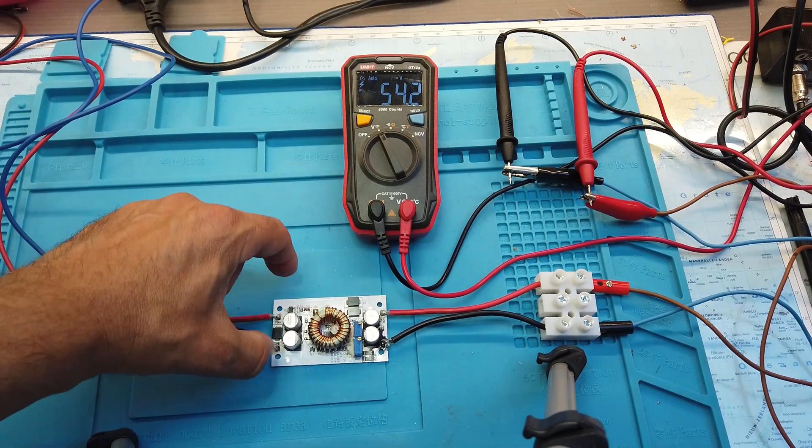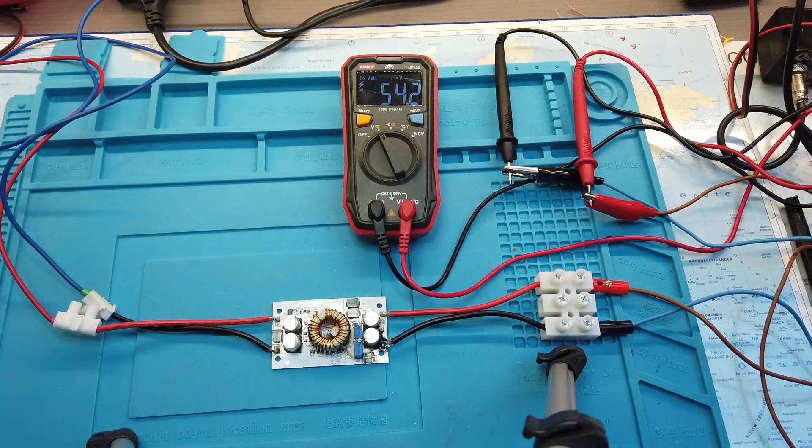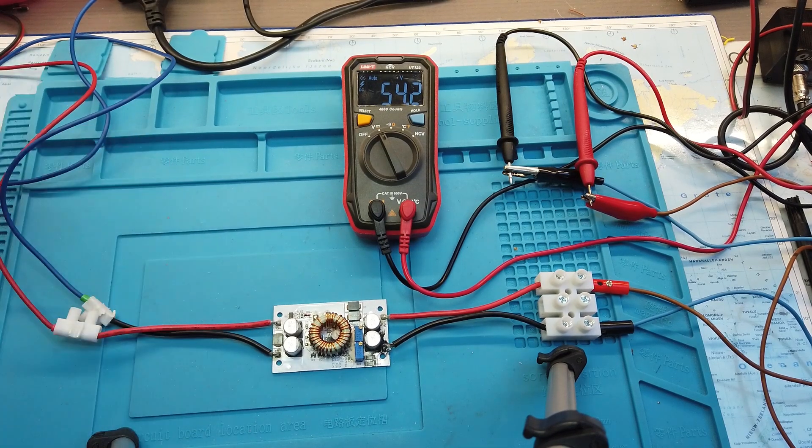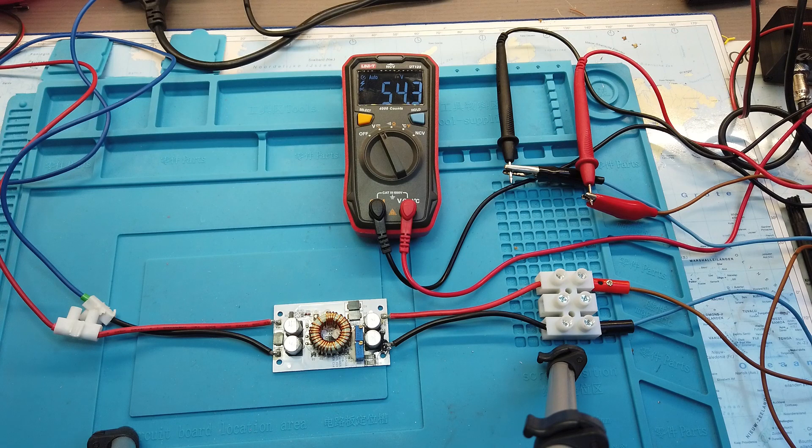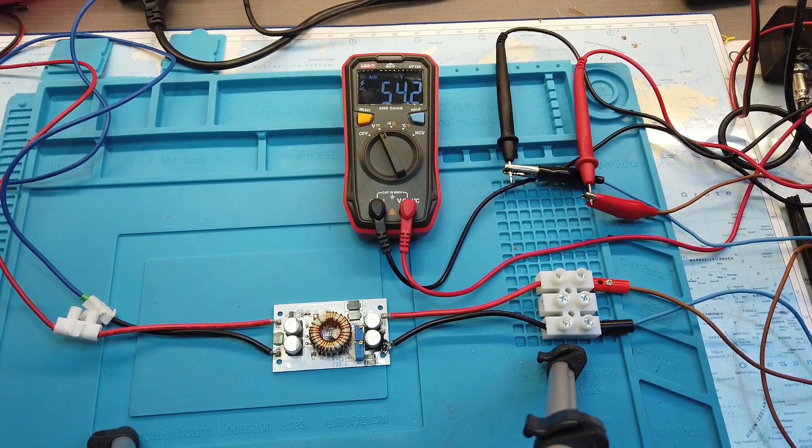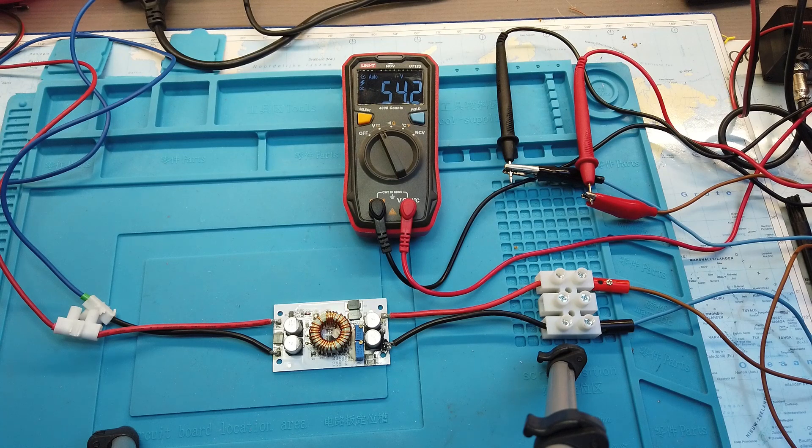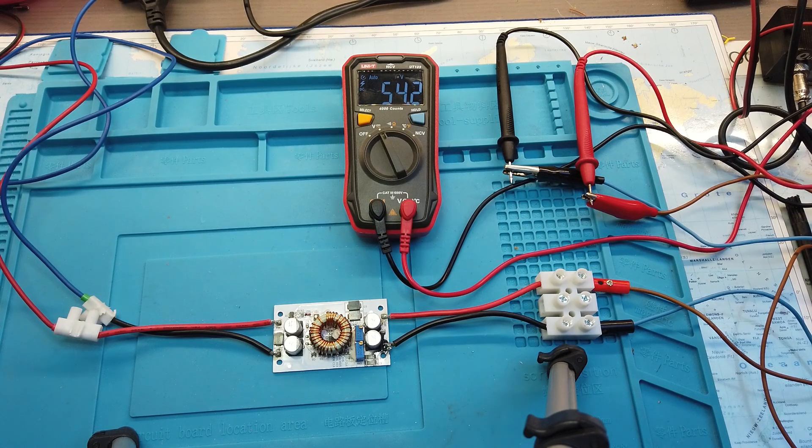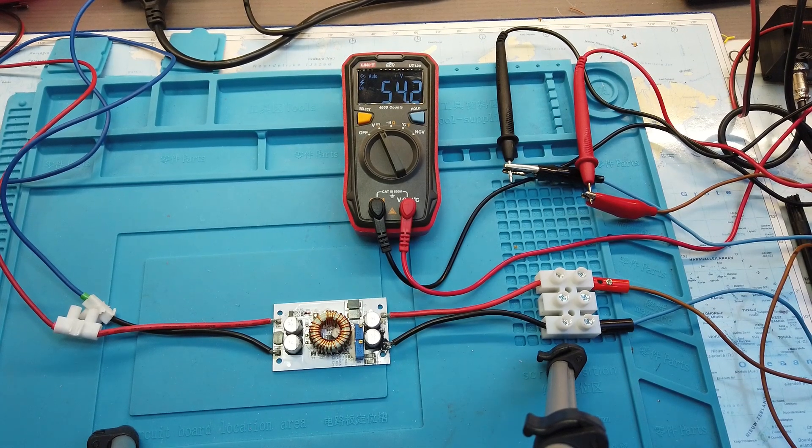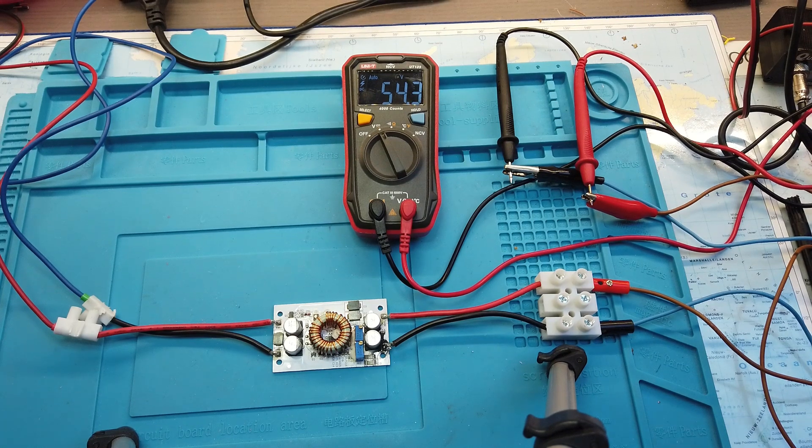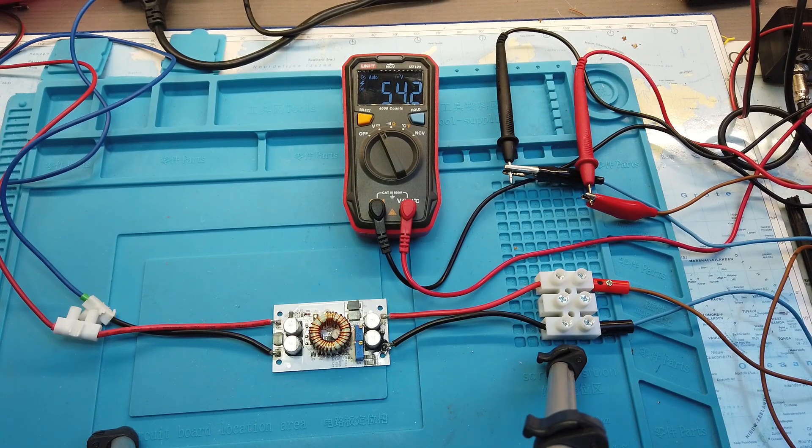Of course you'll find the link to this board in the description. As I said before in the video you can use a very basic power supply. In this case I use a 12 volt power supply but you can also use 24. Just whatever you have in your junk box will work. Just keep in mind that the input voltage will always or has to be lower than your output voltage. Now I will show you how I've done it in real life a couple of months ago.